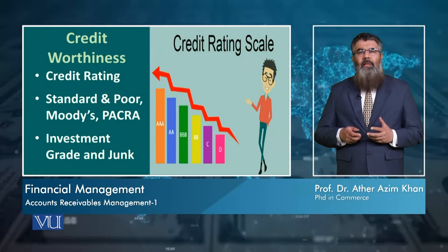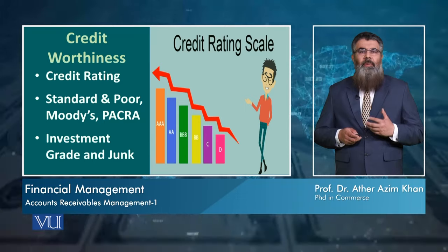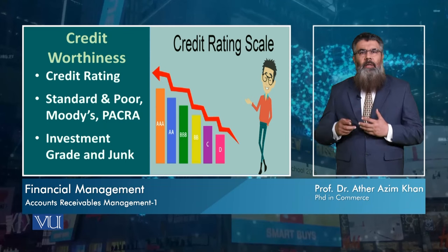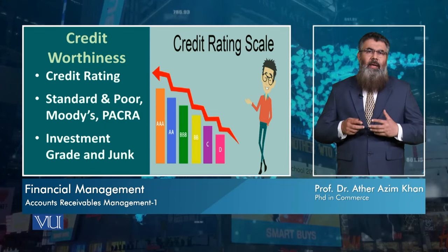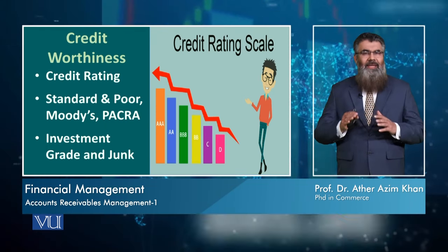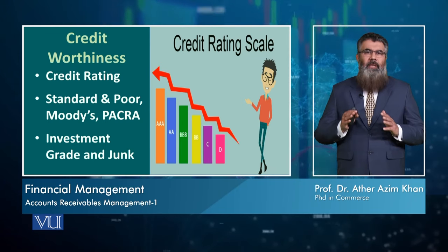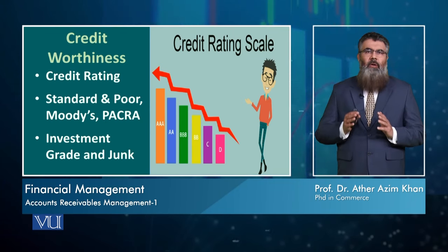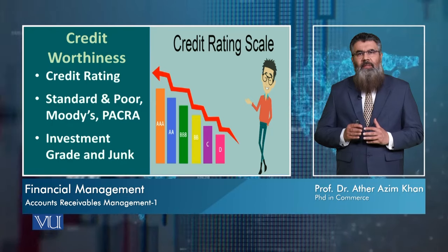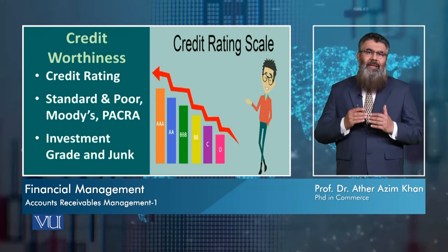Different rating organizations use different letters or grades. For example, in certain cases the ratings are Triple-A, Double-A, Single-A, Triple-B, and as we move downward the creditworthiness keeps on decreasing. If a company has a Triple-A rating, it means the company is very sound and can be offered credit, as it is very strong in making its repayments. If a company is given a Double-A rating, it means its credit rating is relatively lower.